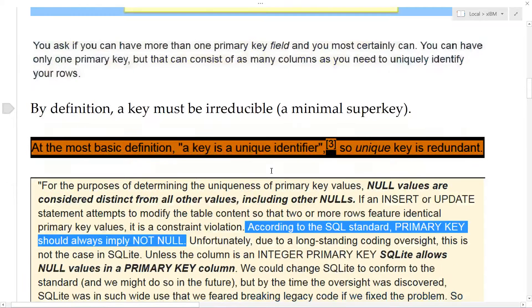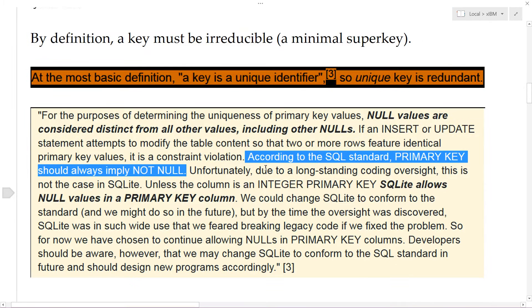And again, from those candidate keys, you can choose one that becomes the primary. So that means that in its most basic definition, a key is a unique identifier. So if you say unique key, it's redundant.